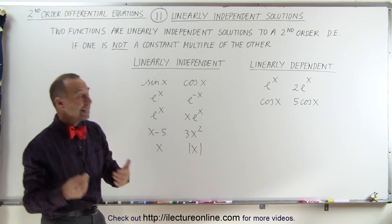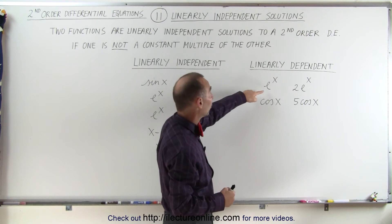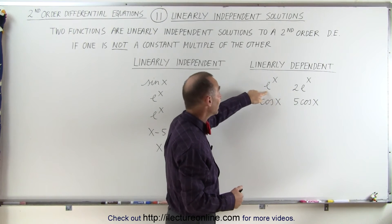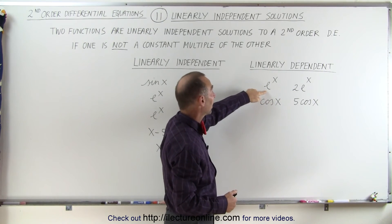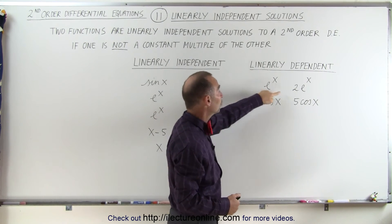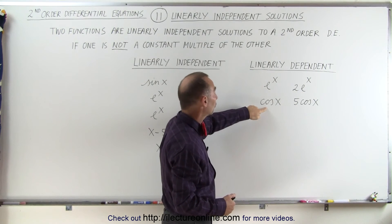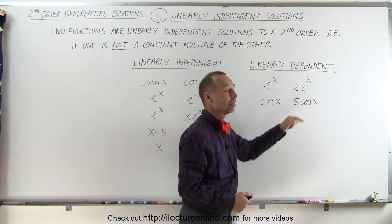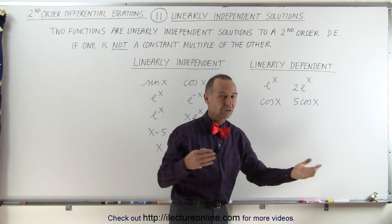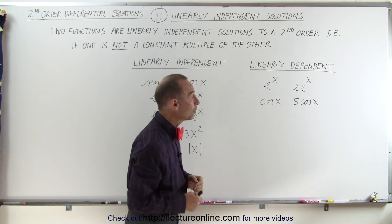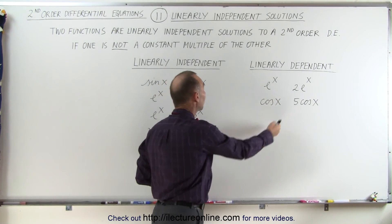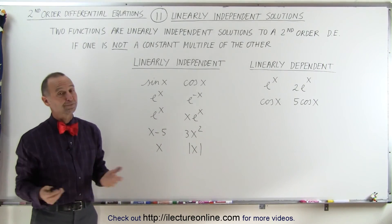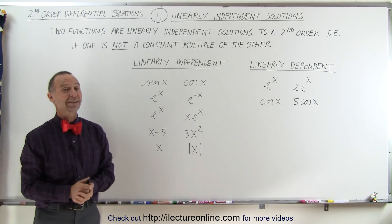Linearly dependent means you can multiply one by a constant to get the other. For example, e to the x multiplied by 2 gives you 2e to the x, and cosine of x multiplied by 5 gives you 5 times the cosine of x. That's the difference between linearly dependent and linearly independent solutions — that's how we can tell.